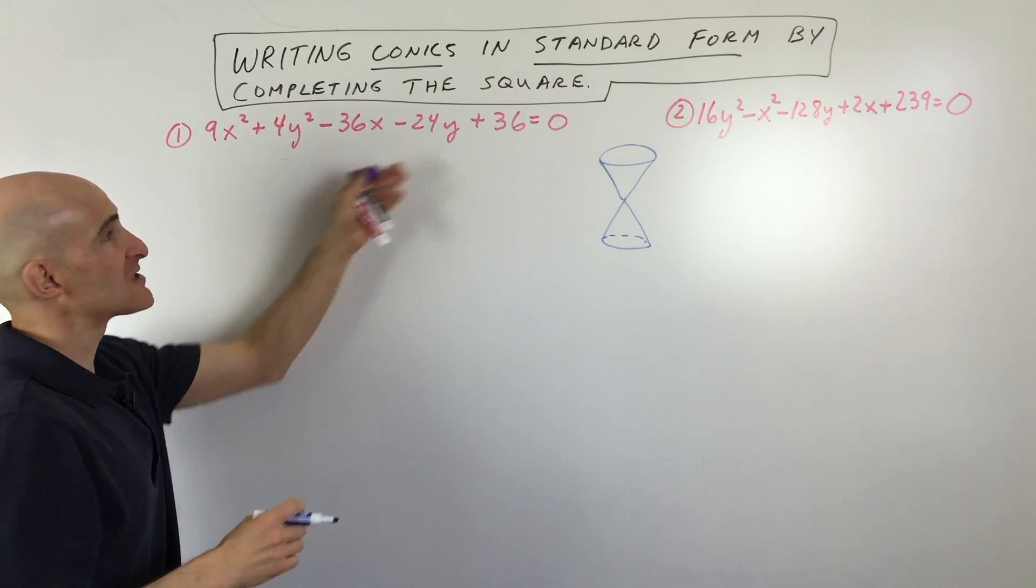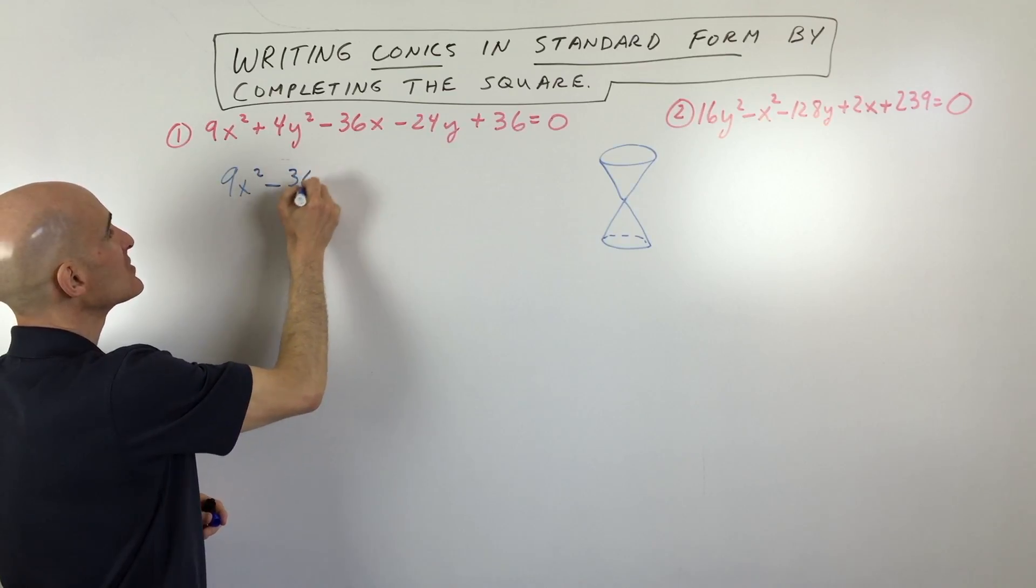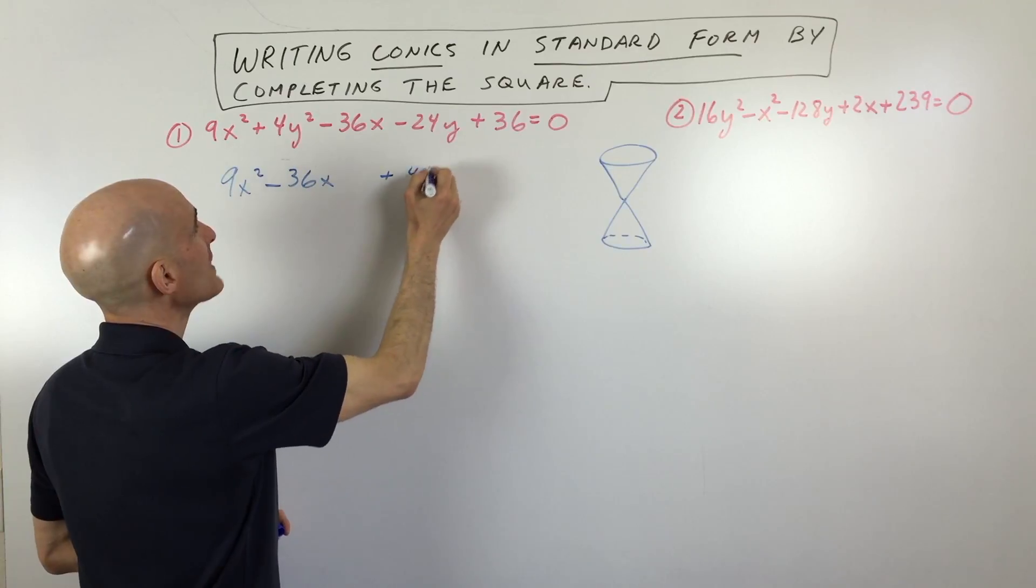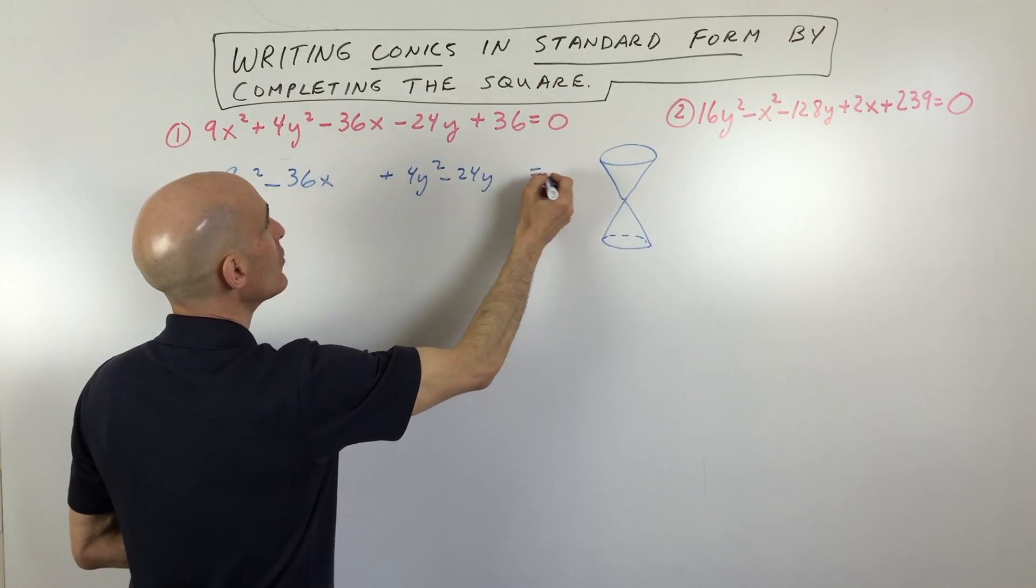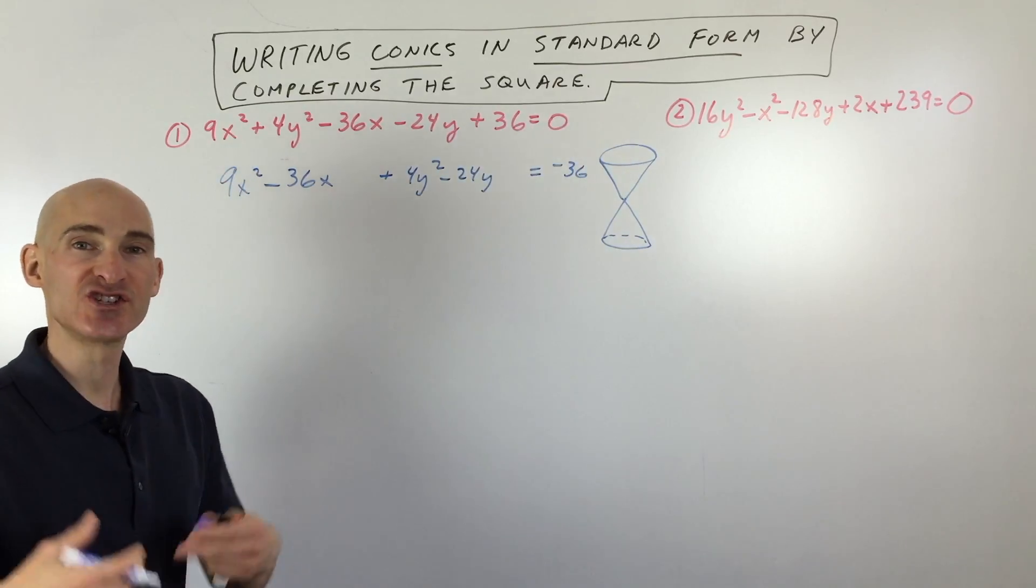So what I'm going to do is I'm going to group the x's together, I'm going to group the y's together. So let's take a look. So we've got 9x squared minus 36x plus 4y squared minus 24y equals negative 36. I'm just going to move the 36 to the other side of the equation just to get it out of the way.